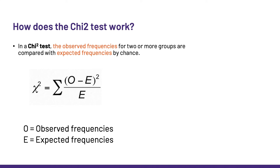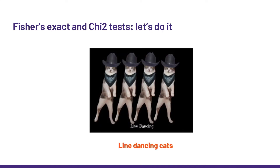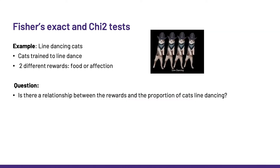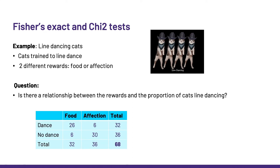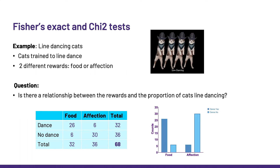Enough theory, let's do it. We are going to look at line-dancing cats — and why not? Let's look at an experiment where cats were trained to line-dance with two different rewards: food or affection. The pivotal question is, is there a relationship between the rewards and the proportion of cats line-dancing? Note that I only talk about relationship, not causality — a stats test is never about causality. These guys used 68 cats, and the results are presented in the contingency table here and on the graph on the right. Looking at this graph, we are expecting some significance.